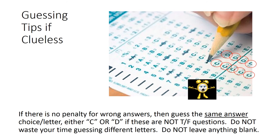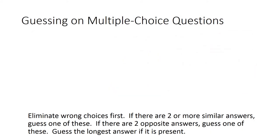Guessing tips if clueless: If there is no penalty for wrong answers, then guess the same answer choice or letter, either C or D, if these are not true-false questions. Do not waste your time guessing different letters. Do not leave anything blank. Guessing on multiple choice questions: Eliminate wrong answers first. If there are two or more similar answers, guess one of these. If there are two opposite answers, guess one of these. Guess the longest answer if it is present.